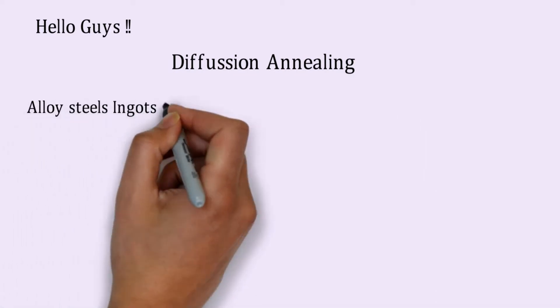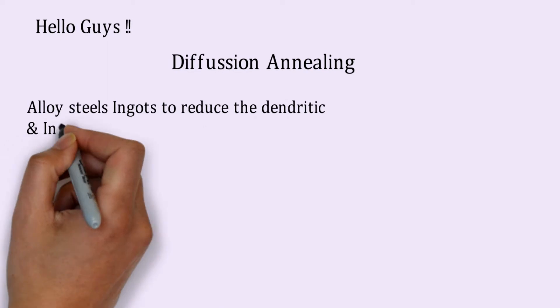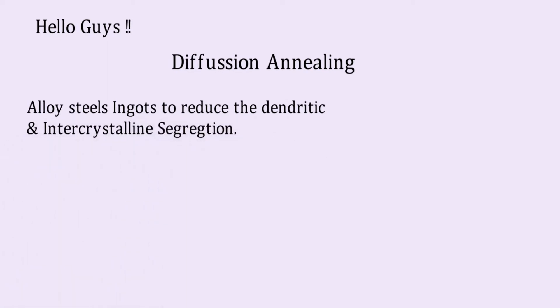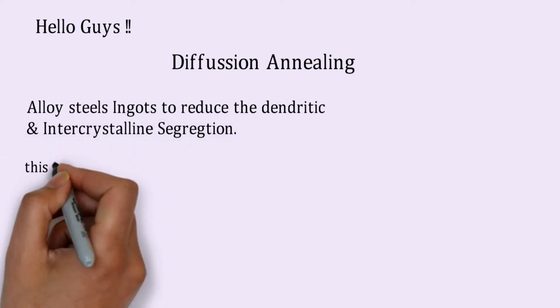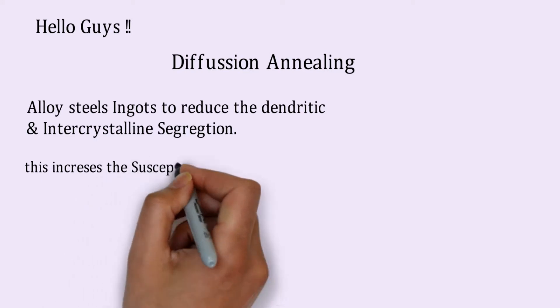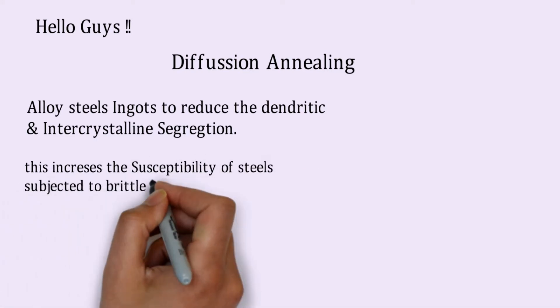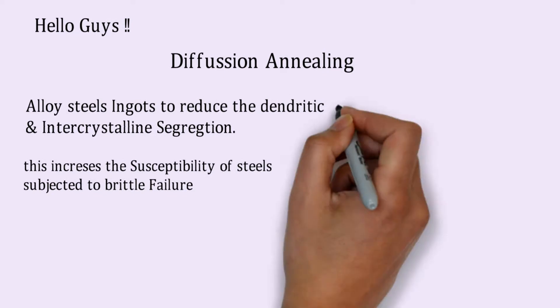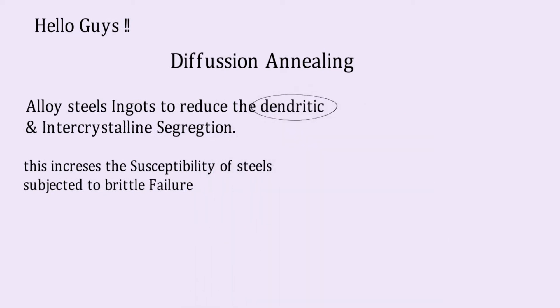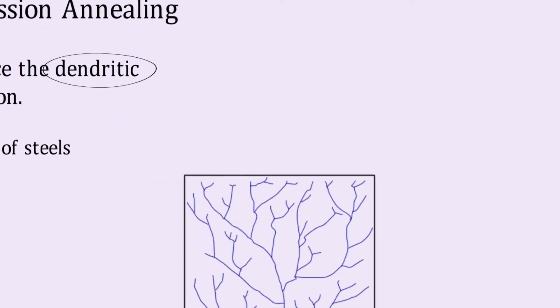The alloy steel ingots undergo diffusion annealing to reduce the dendritic and intercrystalline segregation. This increases the susceptibility of steels subjected to brittle failure due to the dendritic and intercrystalline segregation.